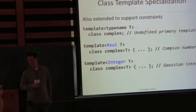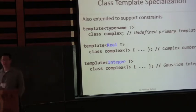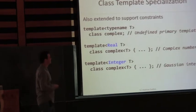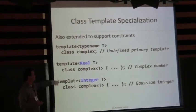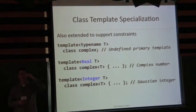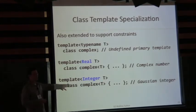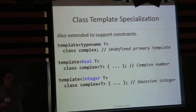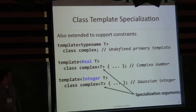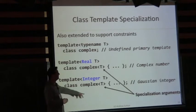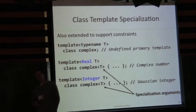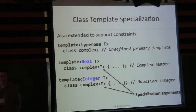We can partially specialize class templates based on constraints. Here we have a redesign of the complex class — the usual complex number required to take types that approximate real numbers. We can also define a Gaussian integer class, basically complex integers, as a different specialization. These are actually specializations — they're specialization arguments — we're not trying to overload class names, which would have been a significant new feature we wanted to avoid.